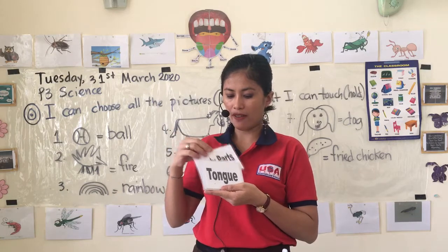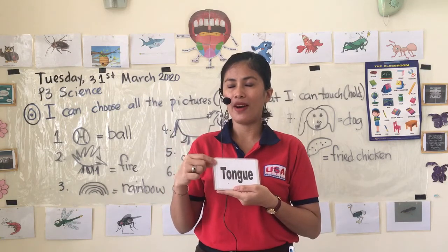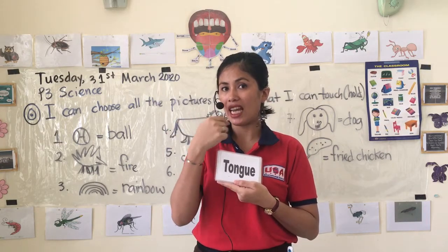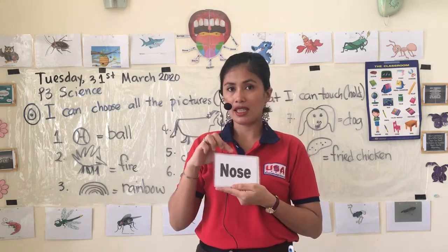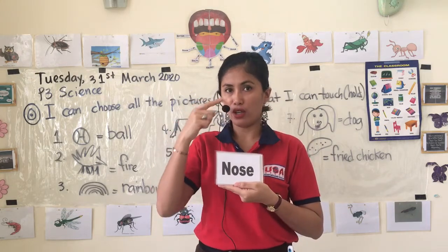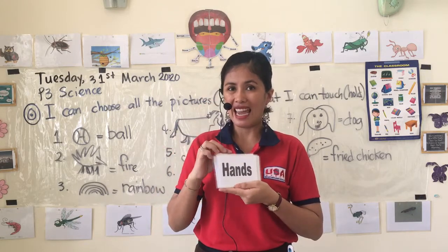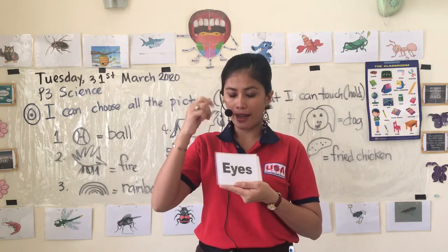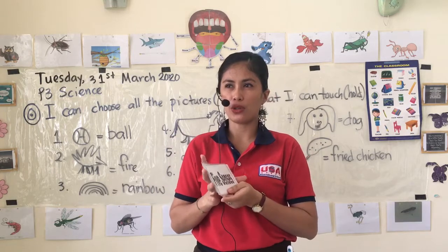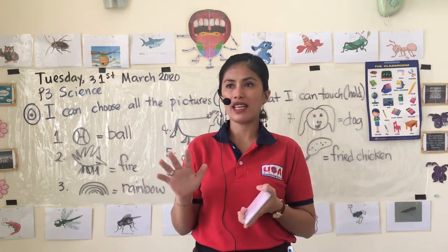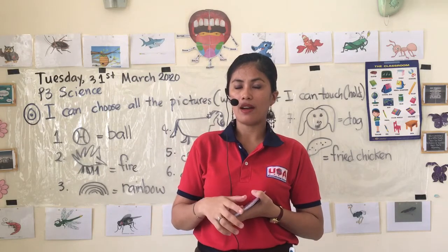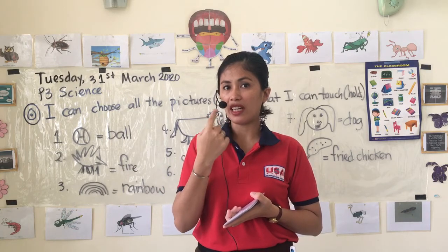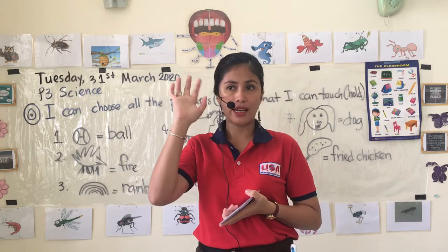Now let's look at the body parts we use for our five senses. What body part is this? Tongue — very good. Where is our tongue? Inside our mouth. What's this? Nose — very good. And ears, and eyes. So again, we have five senses, and the body parts we use are our eyes, our nose, our tongue inside our mouth, our ears, and our hands.